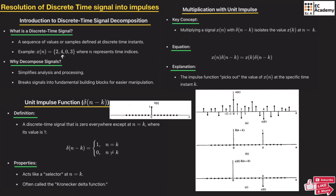The unit impulse function can be represented as shown in this figure. The unit impulse function has the value 1 at n = 0, and for all other values of n, the impulse function has the value 0. So delta(n) equals 1 for n = 0, and 0 otherwise.